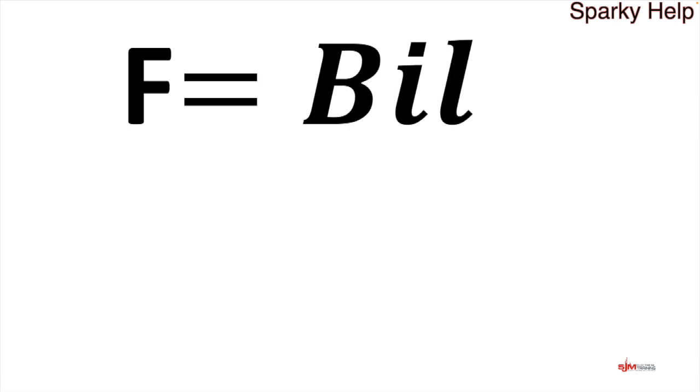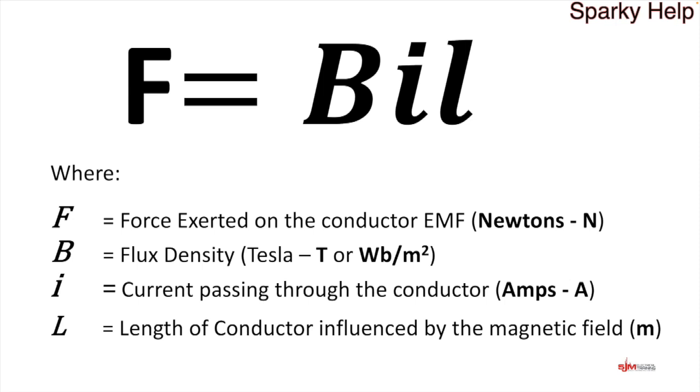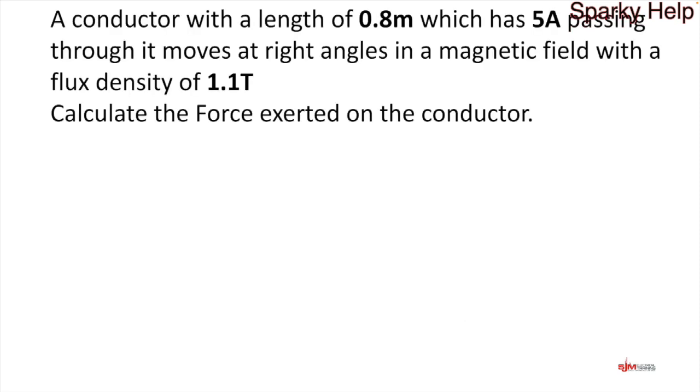How can we apply this then back to the formula F equals B I L? There we've got our currents, our magnetic fields, and our length. A triangle does work: F over B I L. Cover any one of those up. If you want to find I, it would be F divided by B times L. If you want to find L, F divided by B times I. Always the best thing to do is write the formula out and highlight what is relevant in the question. Sometimes they give you information that is not relevant.